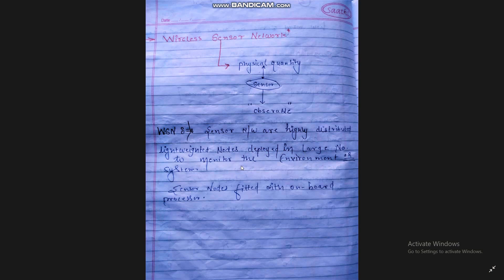Basically, a WSN sensor network sends data or captures the behavior of the environment and stores the data. These sensor nodes are fitted with onboard processors. This is a quick intro about wireless sensor network.